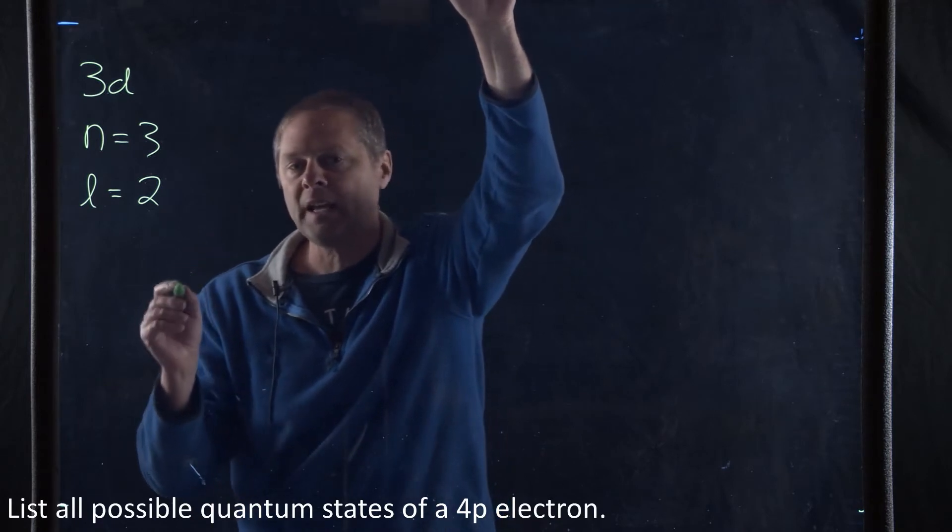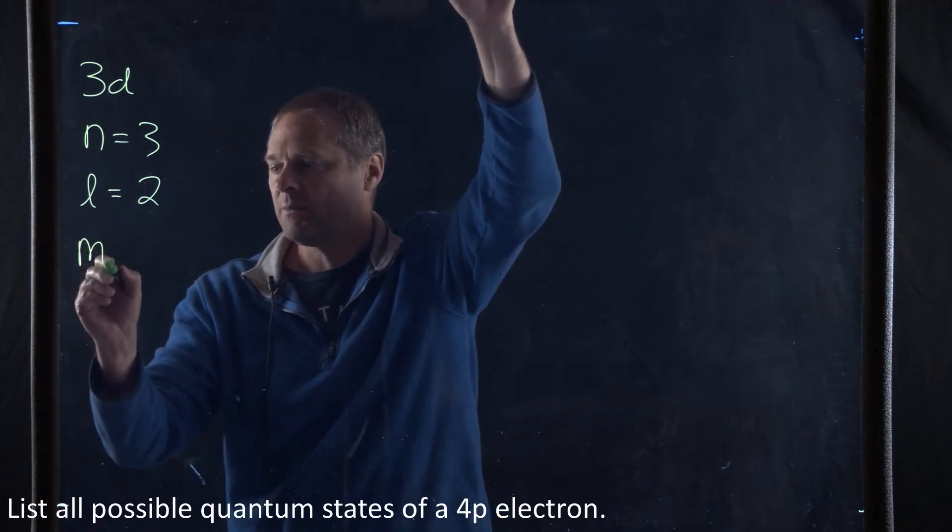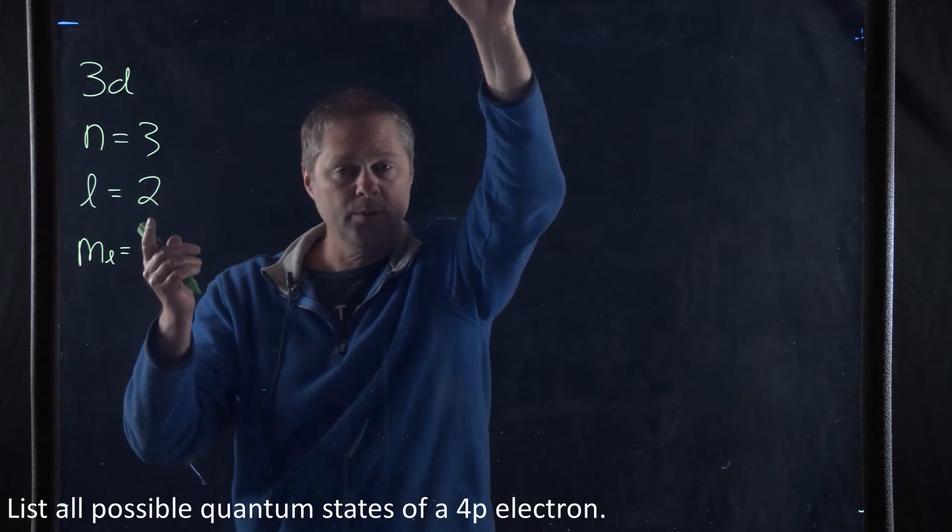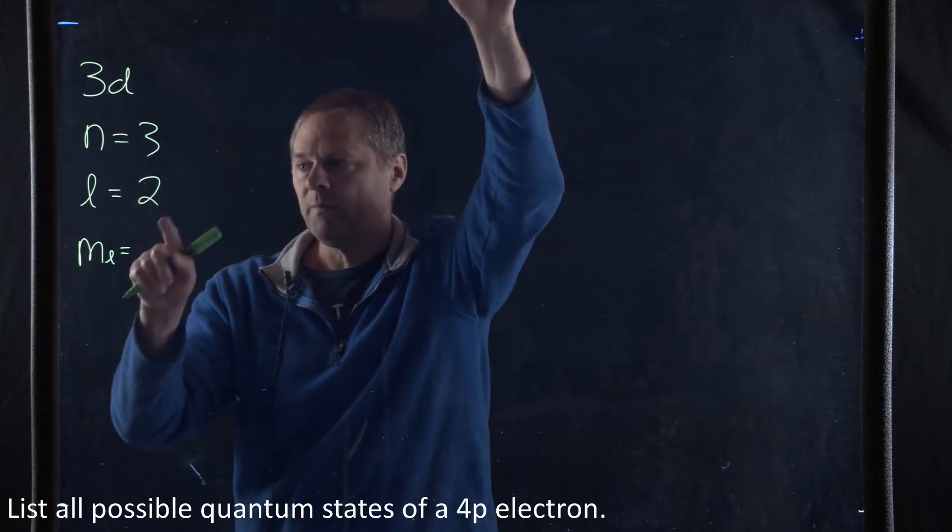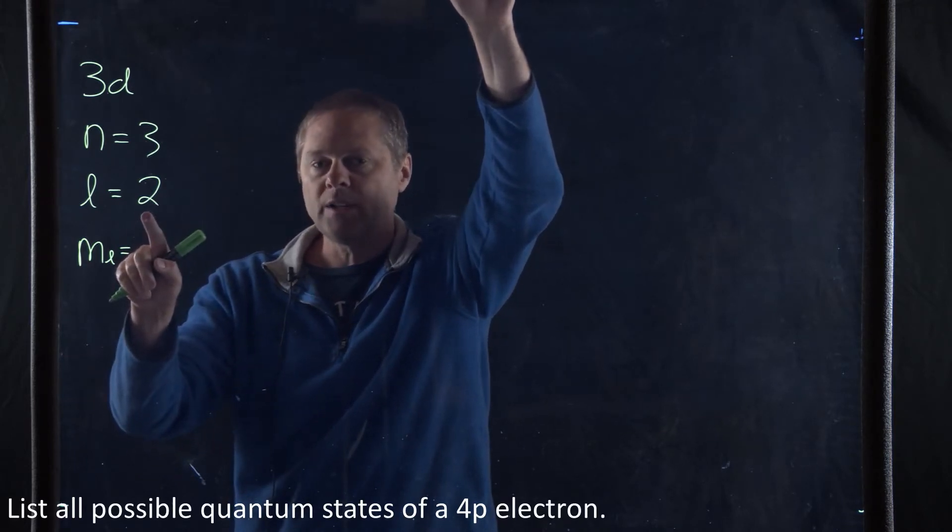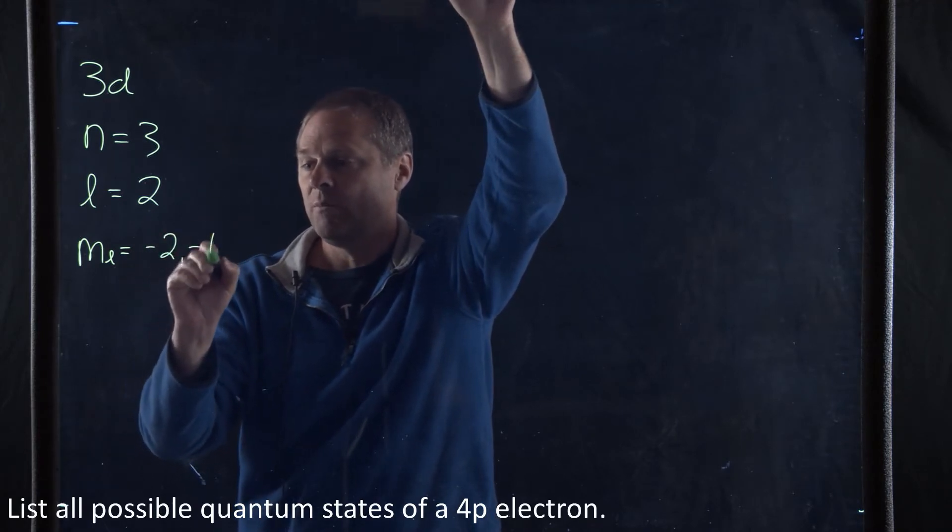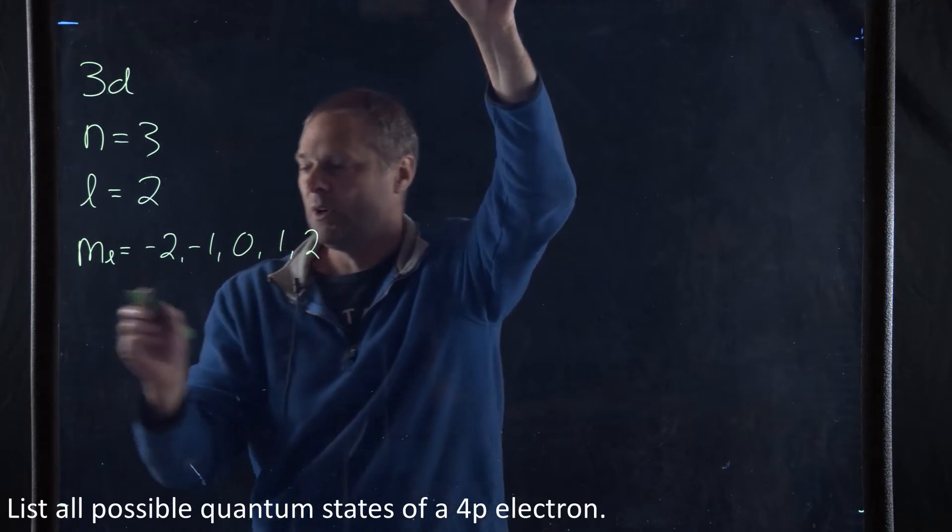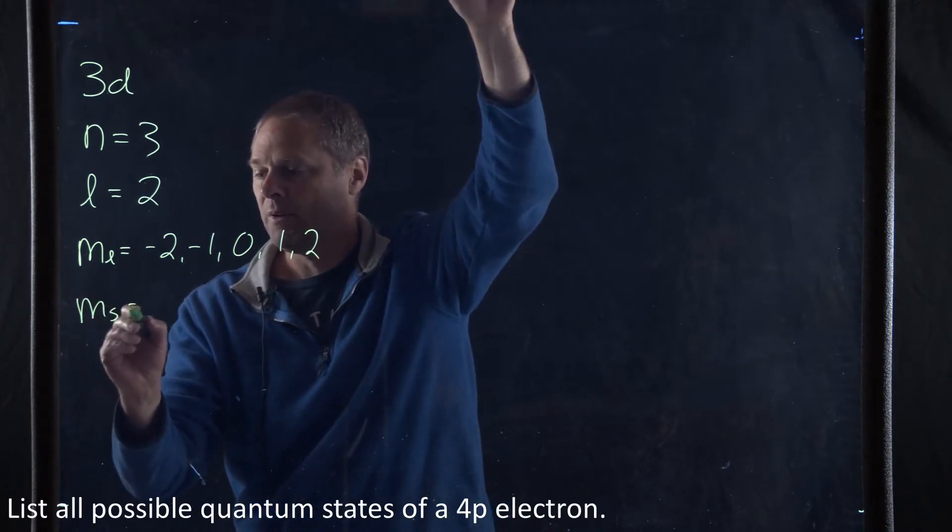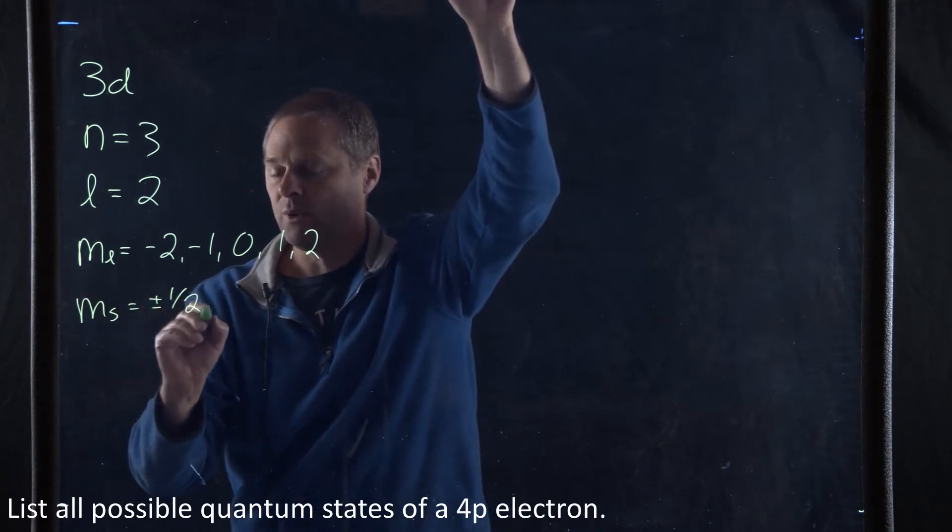Now our magnetic quantum number, m_L, is going to be equal to anywhere between L all the way to minus L. So this becomes equal to -2, -1, 0, 1, and 2. And once again, our spin quantum number is going to be plus or minus 1/2.